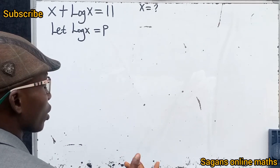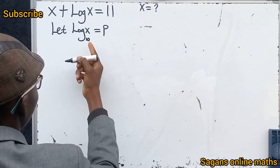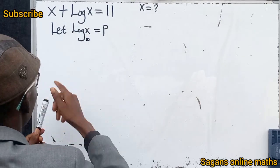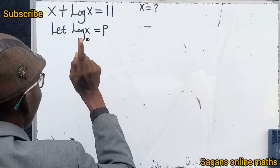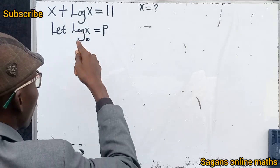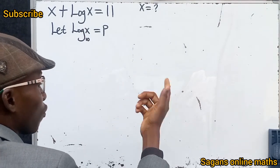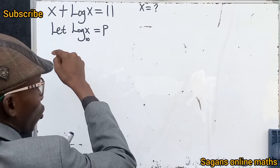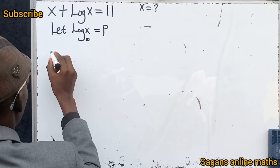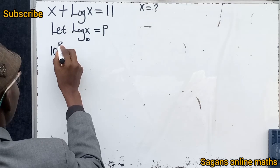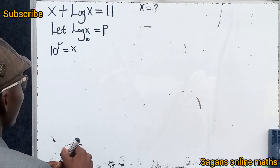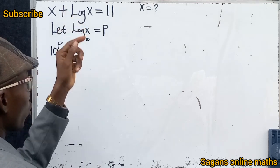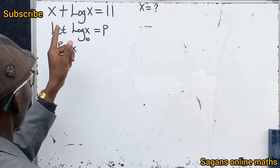Now remember the properties of logarithms. The base here is 10, so by converting from logarithmic form to exponential form, that means 10 raised to the power of p equals x. So log x base 10 = p is the logarithmic form, and 10^p = x is the exponential form.